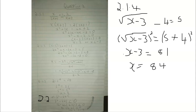I made a mistake not labeling 2.1.4 clearly, but here it is on screen. The equation was: the square root of (x minus 3) minus 4 equals 5. I moved the 4 to the other side to get square root of (x minus 3) equals 9, then squared both sides. x minus 3 equals 81, so x equals 84.